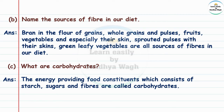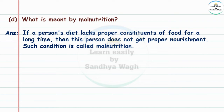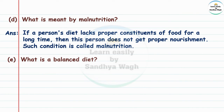Question 5c: What are carbohydrates? Answer: The energy-providing food constituents which consist of starch, sugars and fibers are called carbohydrates. Question 5d: What is meant by malnutrition? Answer: If a person's diet lacks proper constituents of food for a long time, then this person does not get proper nourishment. Such a condition is called malnutrition.